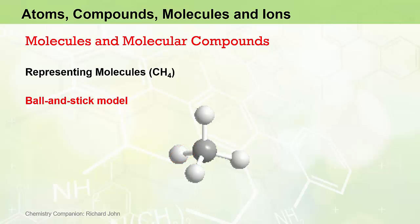In ball and stick models, balls of different colours and sizes are used to represent different atoms, while the bonds between them are represented by cylindrical sticks. While useful for showing the order of attachment of atoms, the overall geometry or shape, and even the angles between atoms, the ball and stick model does not describe the true shape of molecules.